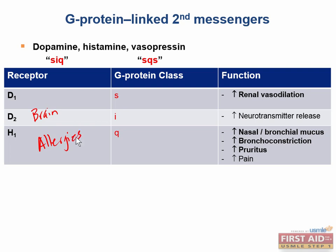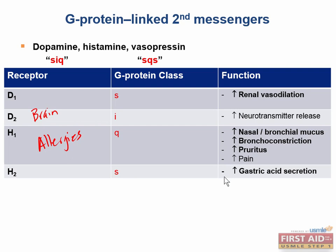The H2 receptor is of the G-sub-S class, and it is found on the parietal cells of the stomach. When stimulated, it increases gastric acid secretion.